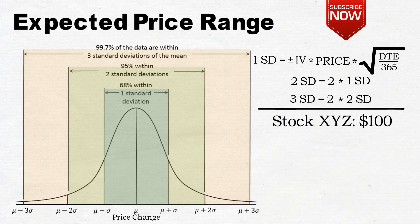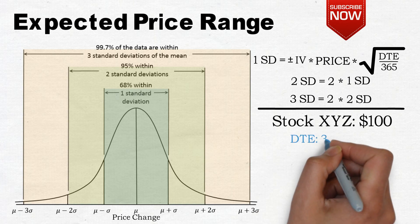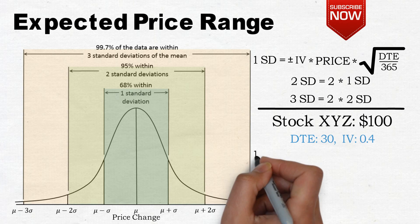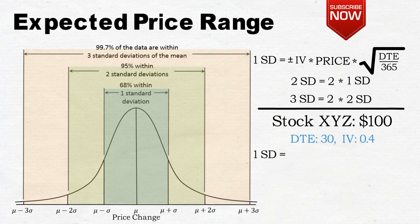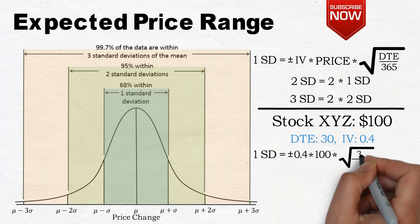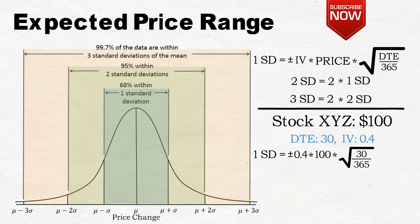Stock XYZ is trading at $100. We will first look at an option with 30 days left till expiration and an implied volatility of 40%. So the one standard deviation range over the next 30 days is plus minus 0.4 times 100 times the square root of 30 divided by 365.